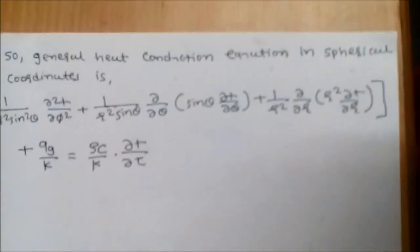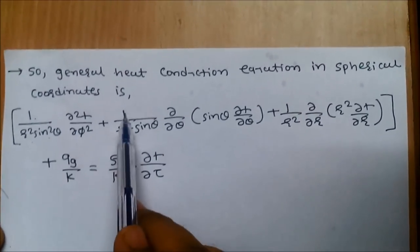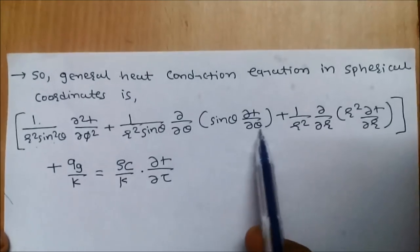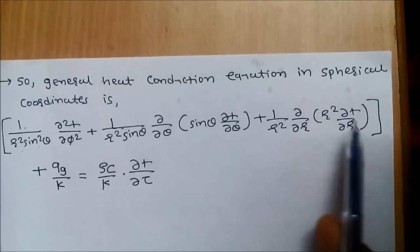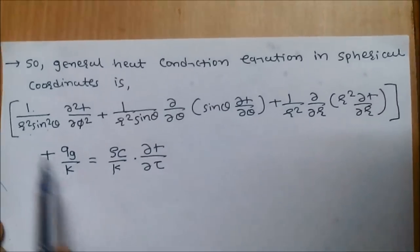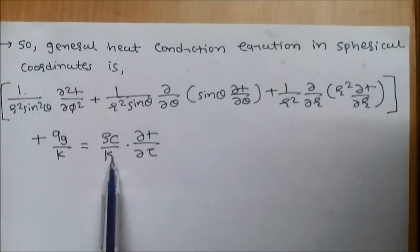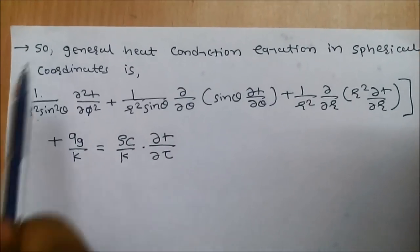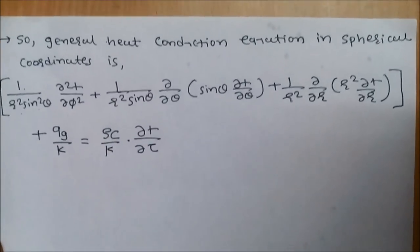After canceling common terms and dividing the entire equation by k, the final general heat conduction equation in spherical coordinates is: (1/r²·sin²θ)(δ²T/δφ²) + (1/r²·sinθ)(δ/δθ)(sinθ·δT/δθ) + (1/r²)(δ/δr)(r²·δT/δr) + qg/k = (ρc/k)(δT/δτ). This is the general heat conduction equation in spherical coordinates. Thank you.